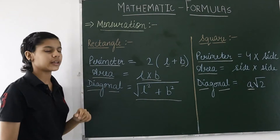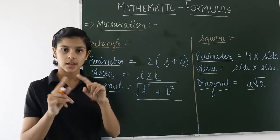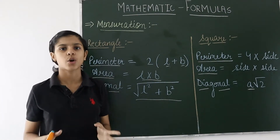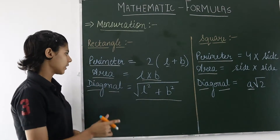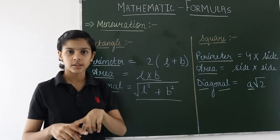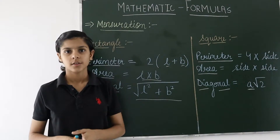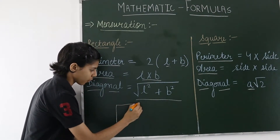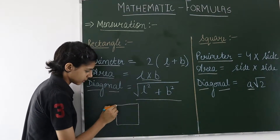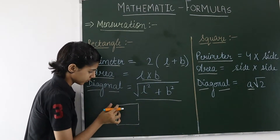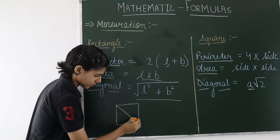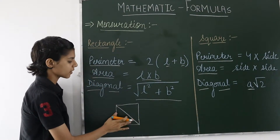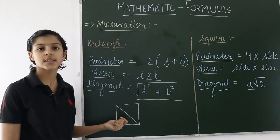So basically, what is perimeter? Perimeter is the sum of all the lengths and sides of the figure. Area is the total inside area of the figure. And the diagonal is the center line that passes through the figure.